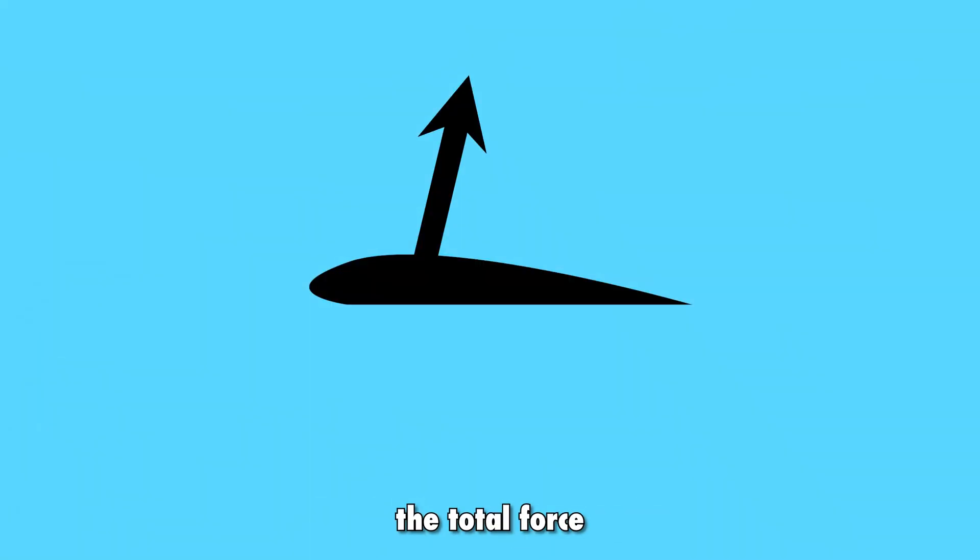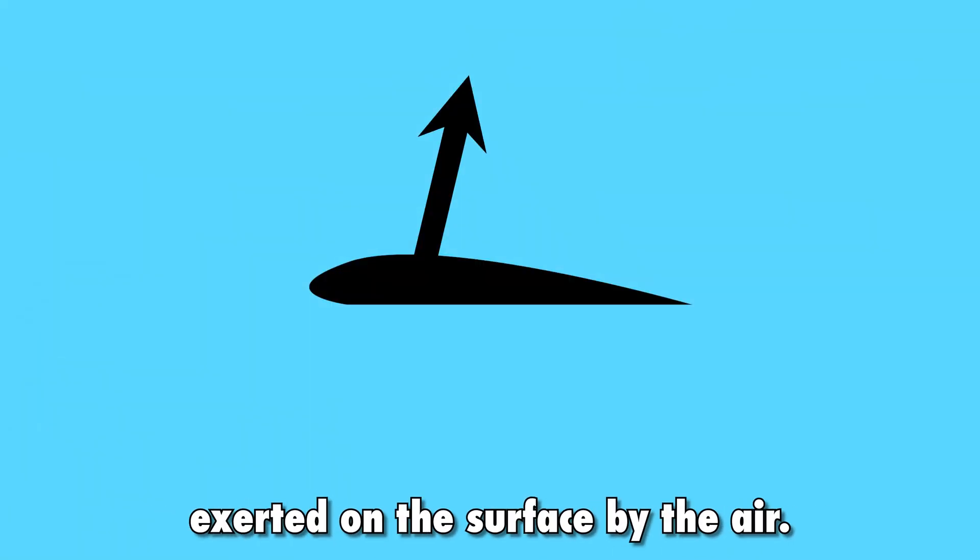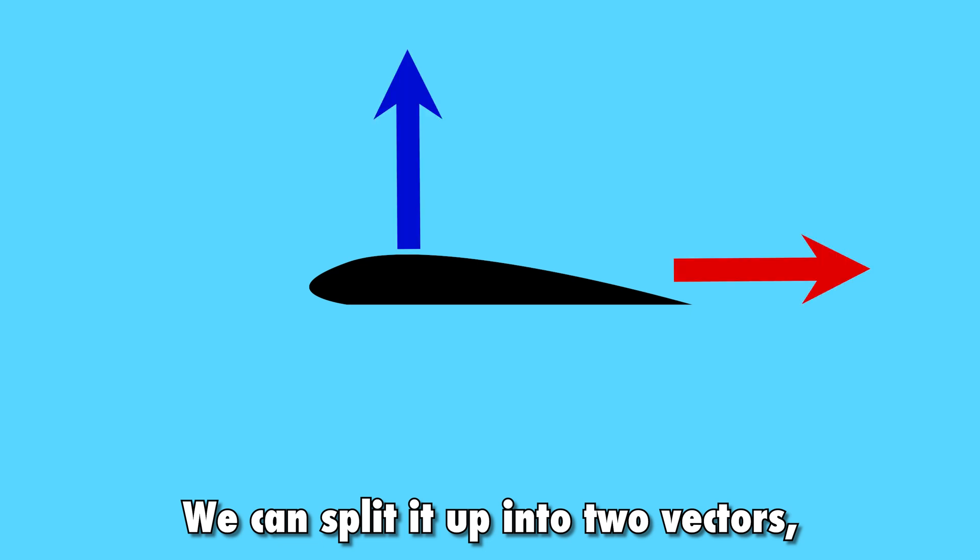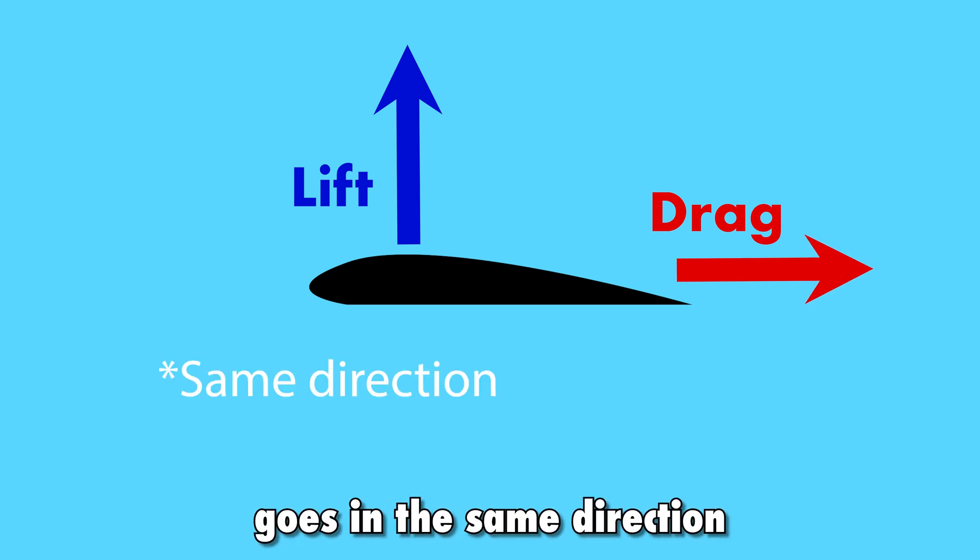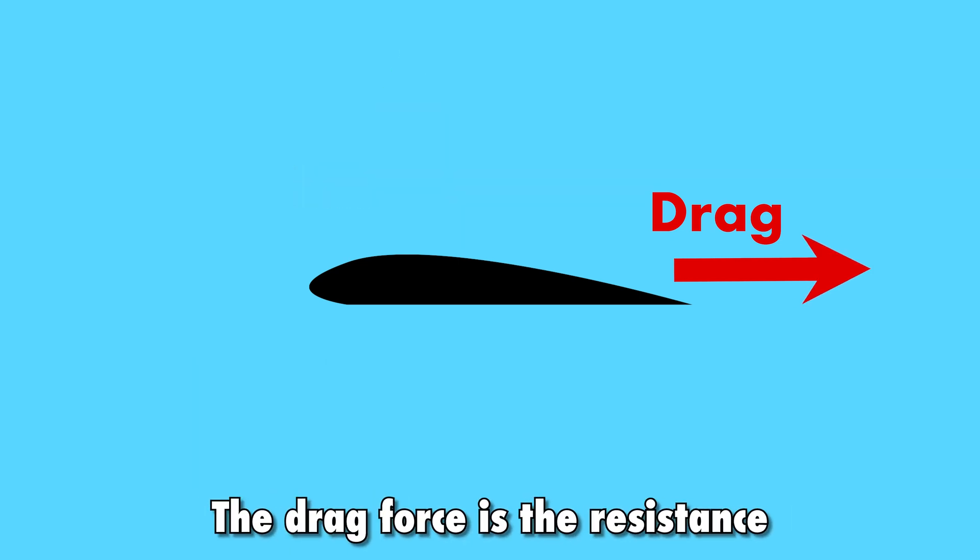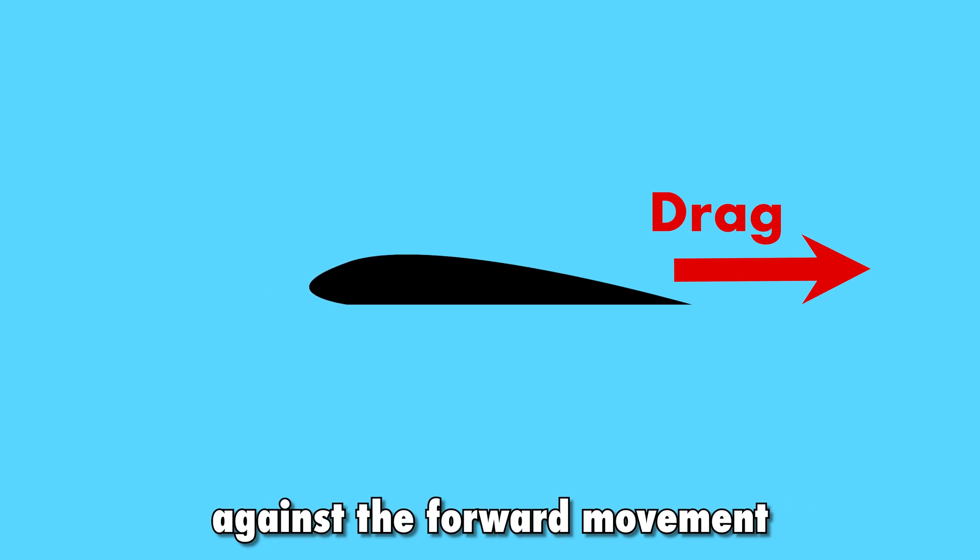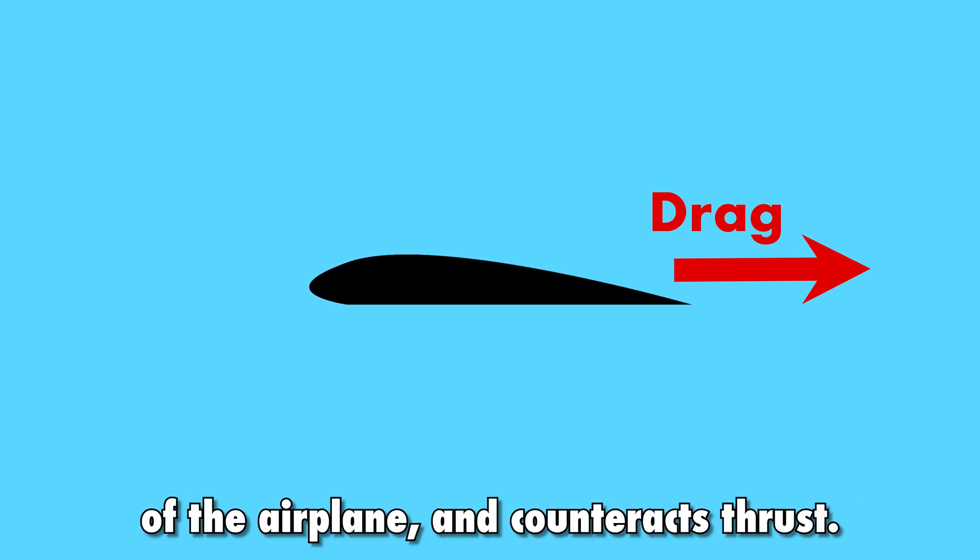This line represents the total force exerted on the surface by the air. We can split it up into two vectors, lift and drag. The lift force acts perpendicular to the direction of the airflow, while the drag force goes in the opposite direction of the airflow. The drag force is the resistance against the forward movement of the airplane and counteracts thrust.